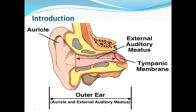As you all know, the ear is an organ of hearing. The function of the ear is not only for hearing but it is also concerned with maintaining the equilibrium of the body. If you have studied the central nervous system, you know that the ear also plays an important role in maintaining equilibrium. We will not discuss that in detail in this video lecture.